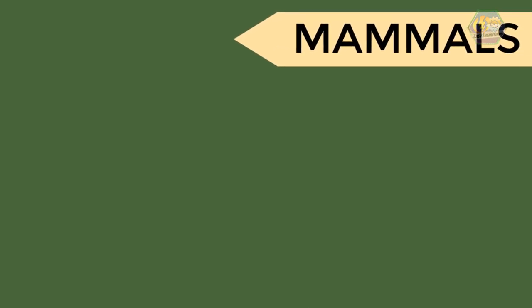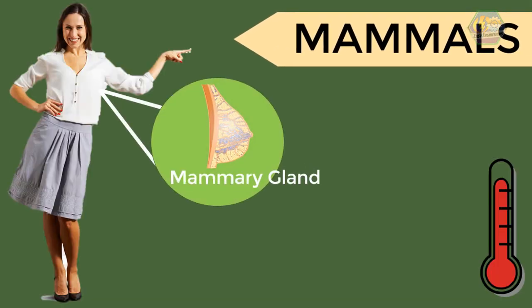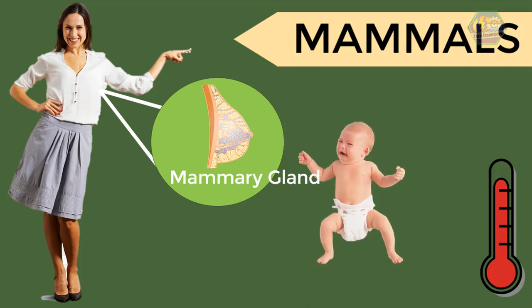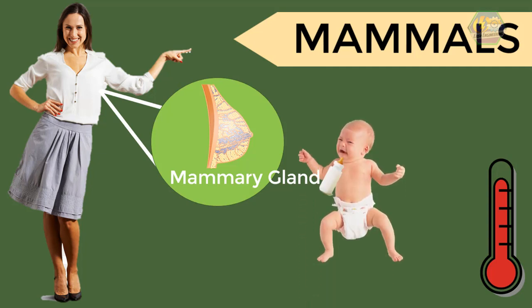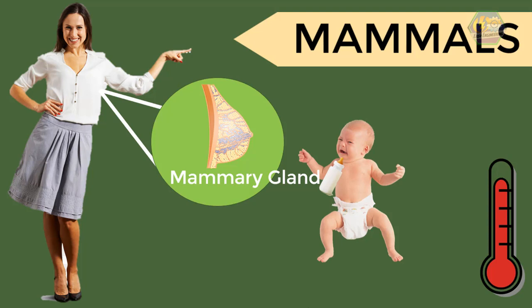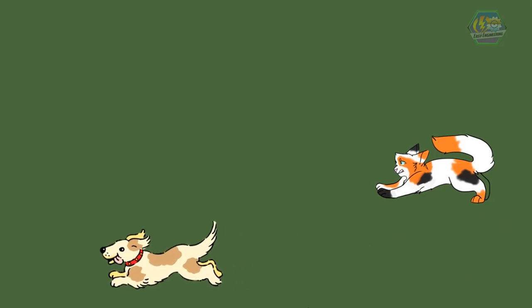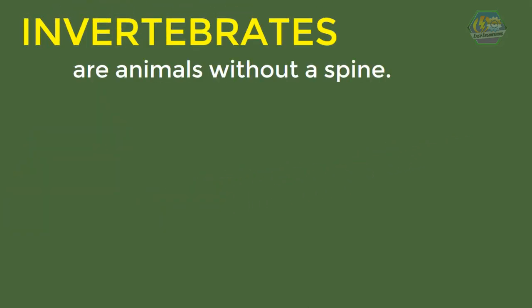Lastly, the mammals — animals with mammary glands, and that includes us humans. They are warm-blooded, give birth to babies, and produce milk using their mammary glands. Most mammals are furry, like the pet dogs and cats we have at home.